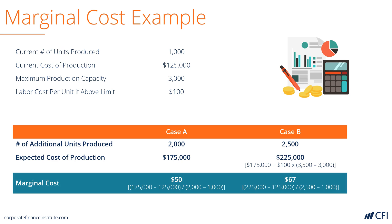Now let's look at the actual marginal cost for each. In case A it's $50 a unit. In case B it's $67 per unit. For the firm's initial production — 1,000 units at $125,000 — the cost of production was $125 per unit.